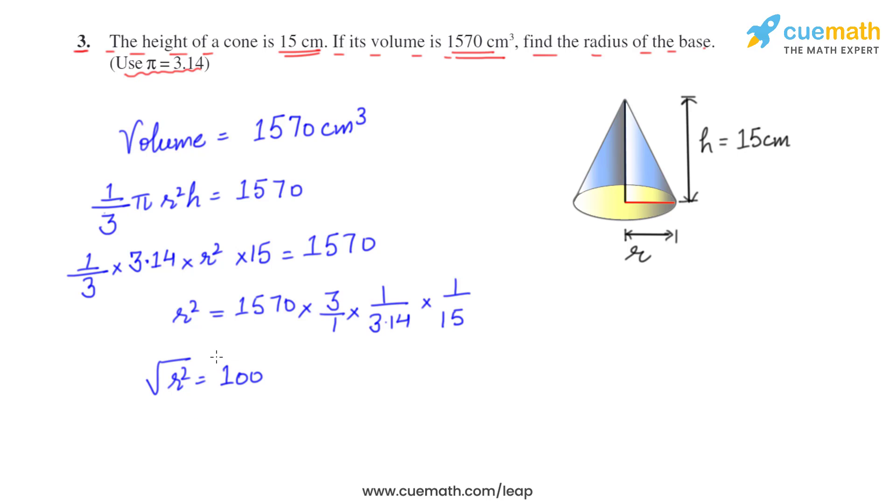Now, we have to solve for r. We take square root on both sides. So, r is equal to 10 centimeters. It means the radius of base of this cone is 10 centimeters.